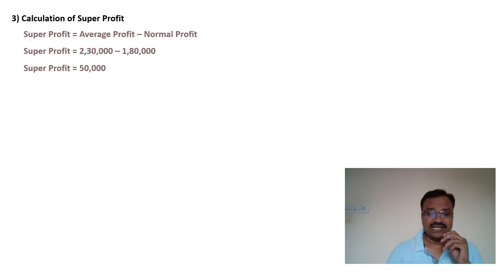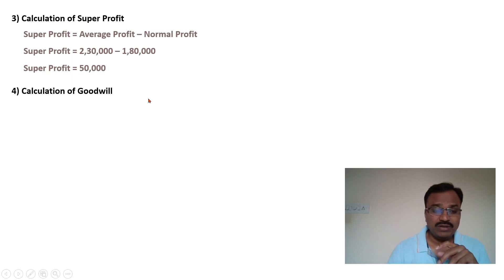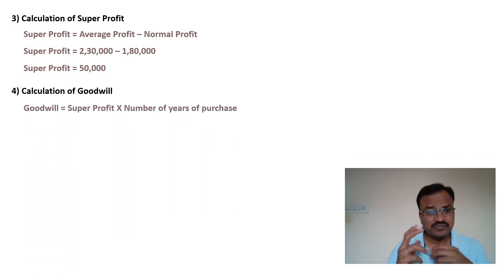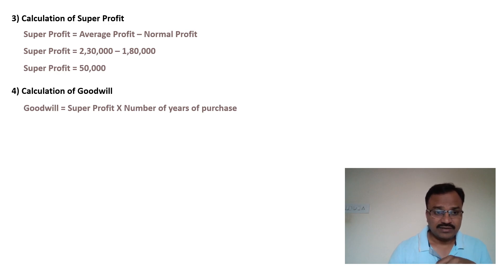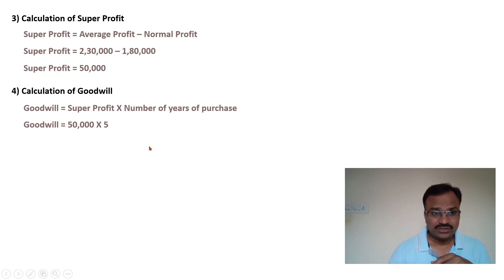It means this firm is earning Rs. 50,000 as super profit. As per the condition given, goodwill is to be valued at five years purchase of super profits. So in the fourth step, goodwill = super profit × number of years of purchase = 50,000 × 5 = Rs. 2,50,000.